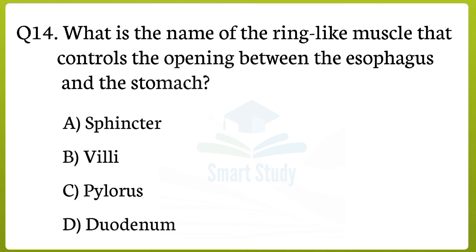Question number 14. What is the name of the ring-like muscle that controls the opening between the esophagus and the stomach? The correct answer to that question is option A: Sphincter.